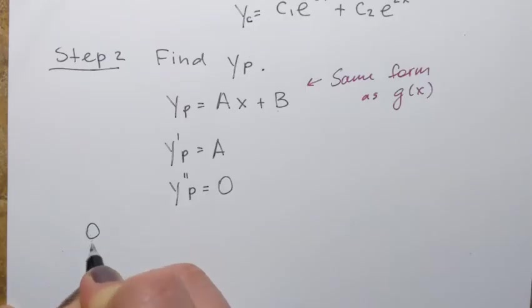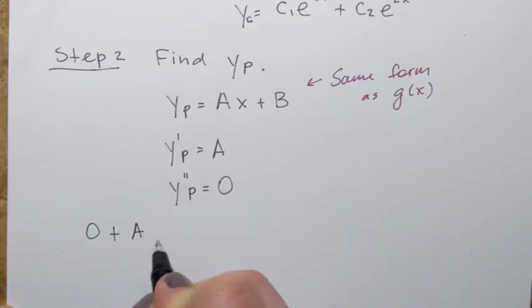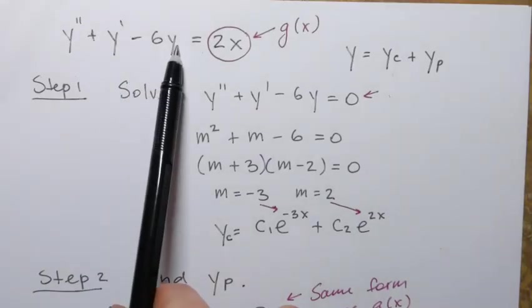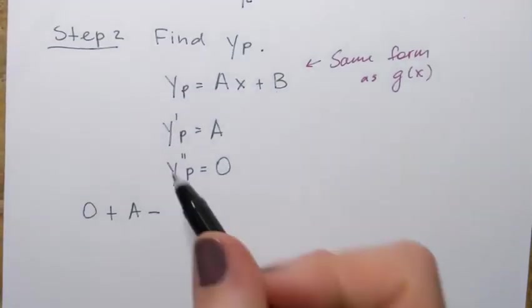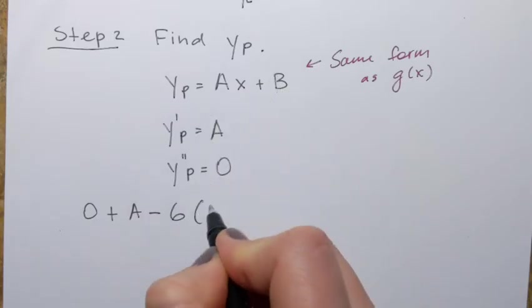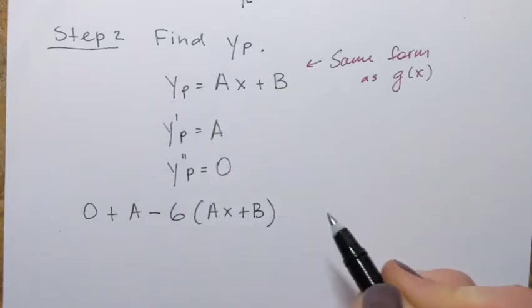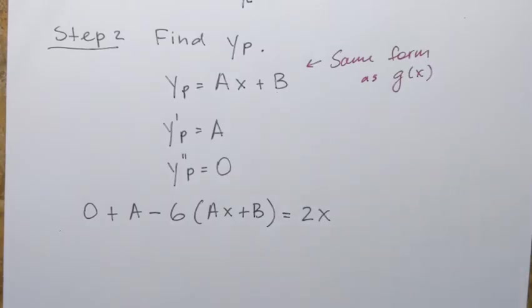Now we plug everything into our differential equation. y double prime gives zero, plus y prime gives a, then minus 6y gives minus 6 times (ax plus b), and the right-hand side is 2x. Simplifying the left-hand side gives: a minus 6ax minus 6b equals 2x.